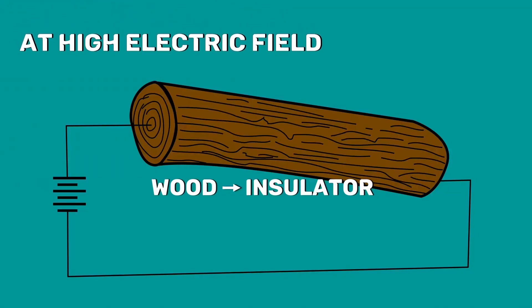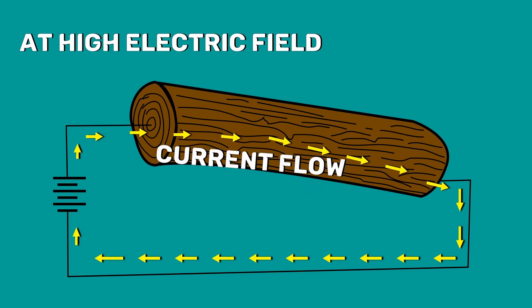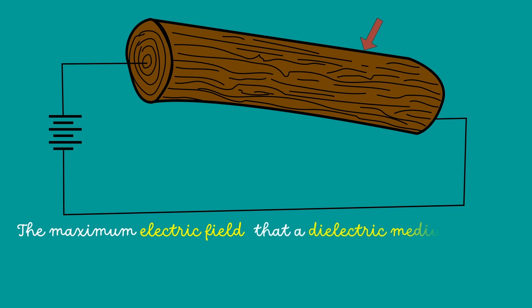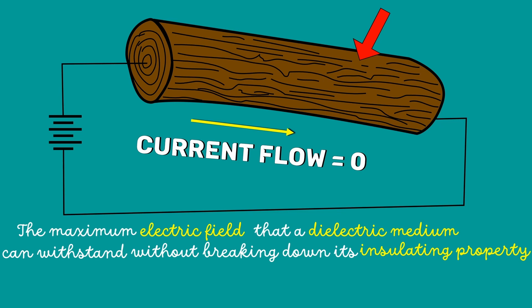As I said earlier, the air acts as an insulator or in other words, a dielectric medium. There is one property of insulator that we should be familiar with. We know that insulators don't allow current to flow through them. But at high electric field, the breakdown of the insulator occurs and it starts acting as a conductor. The maximum electric field that a dielectric medium can withstand without breaking down its insulating property is called dielectric strength.